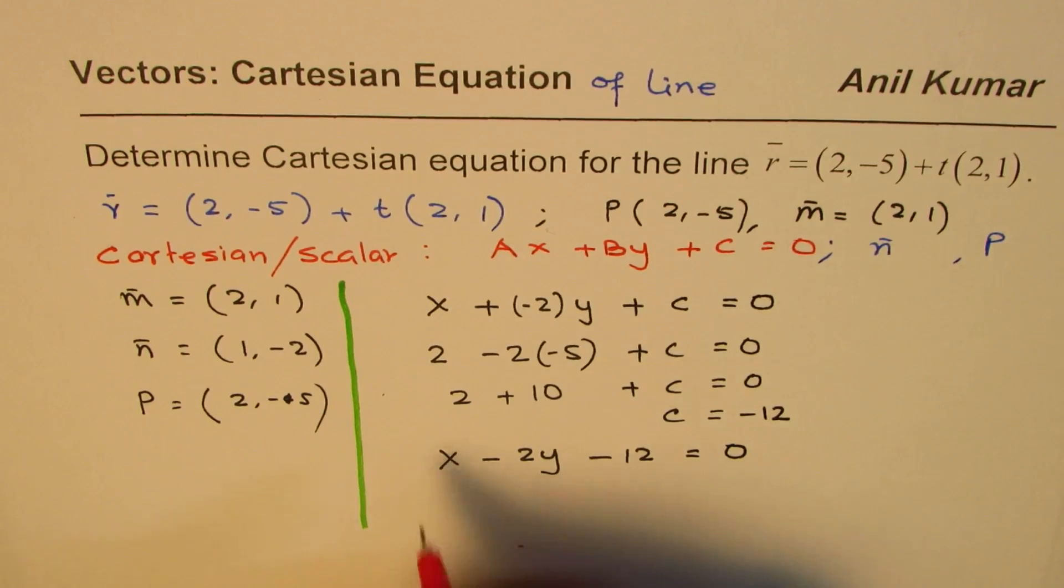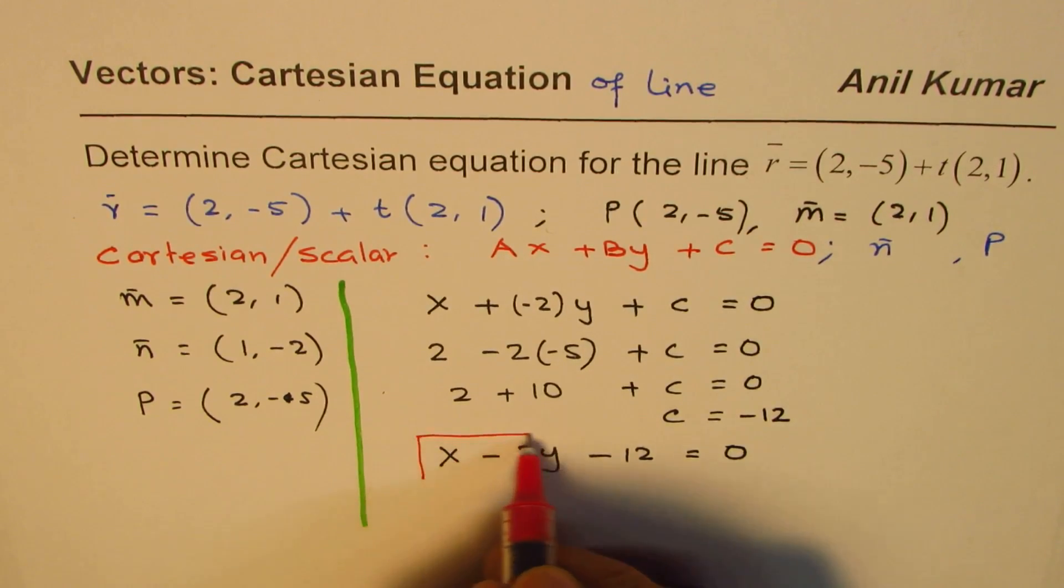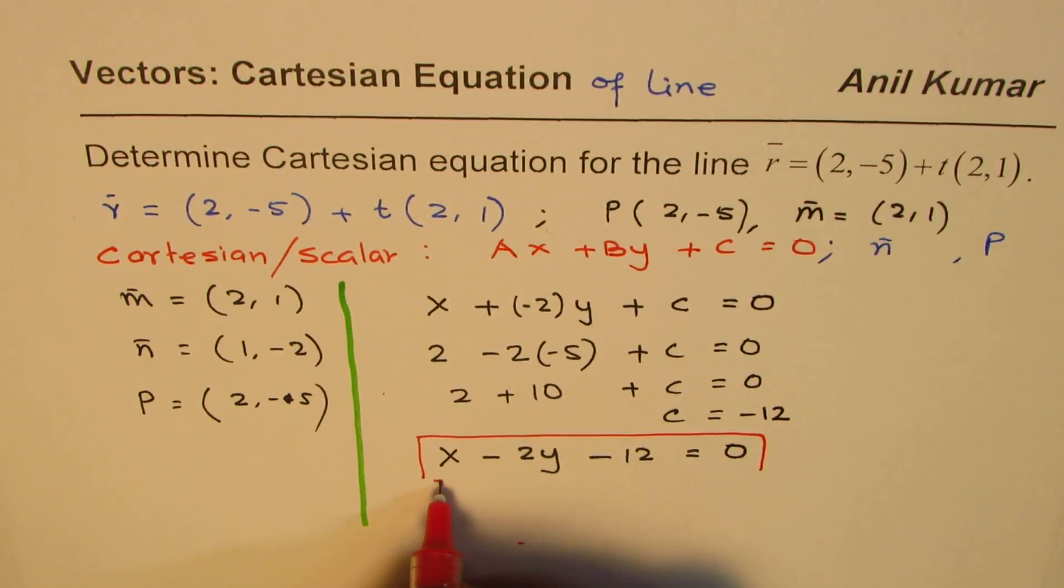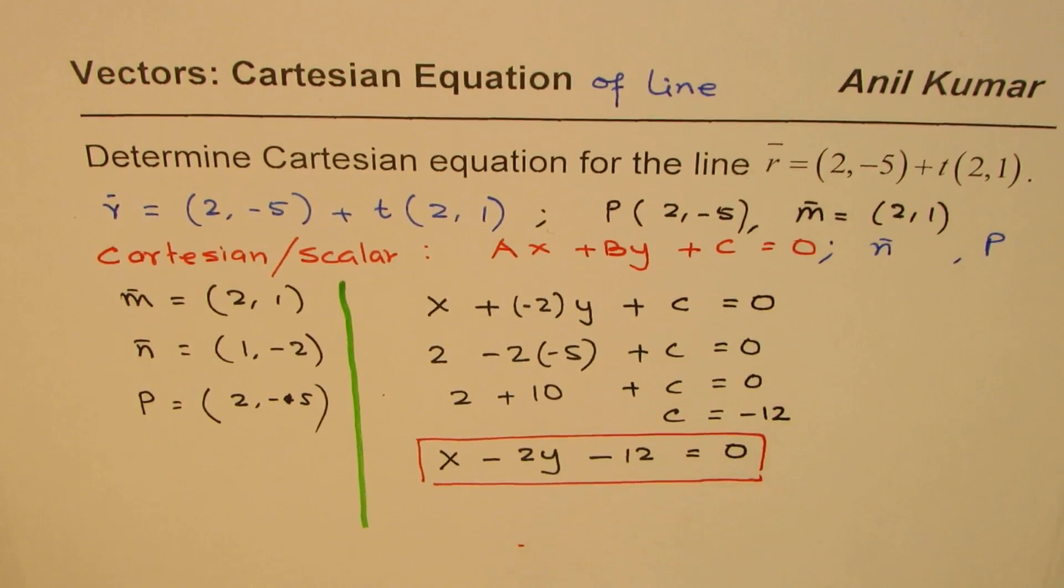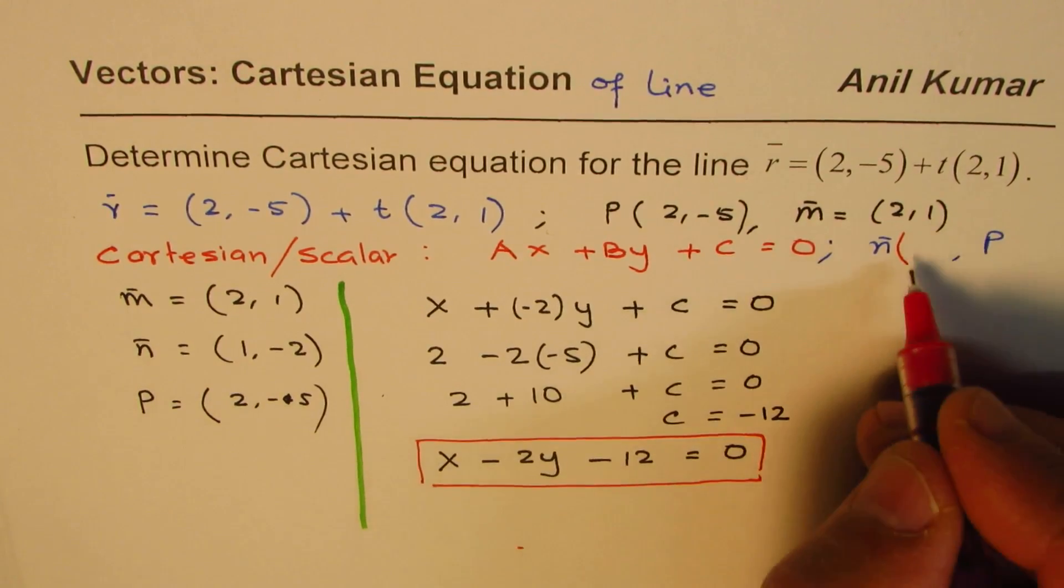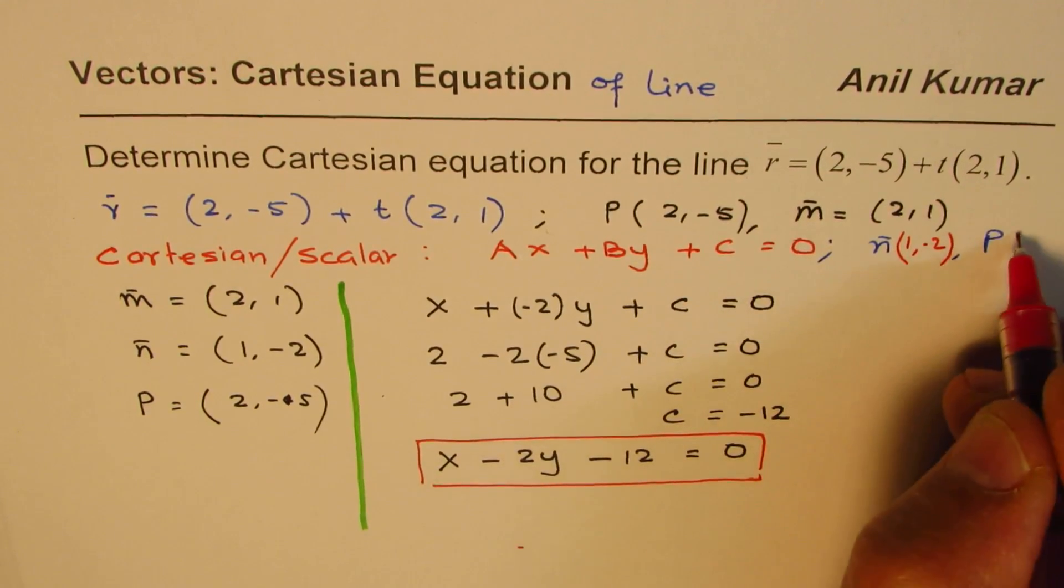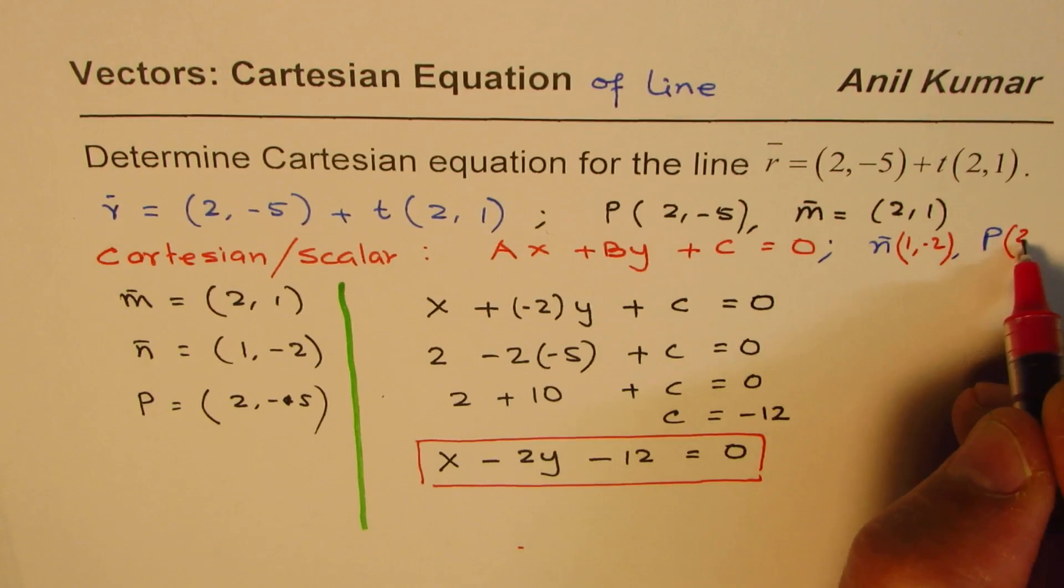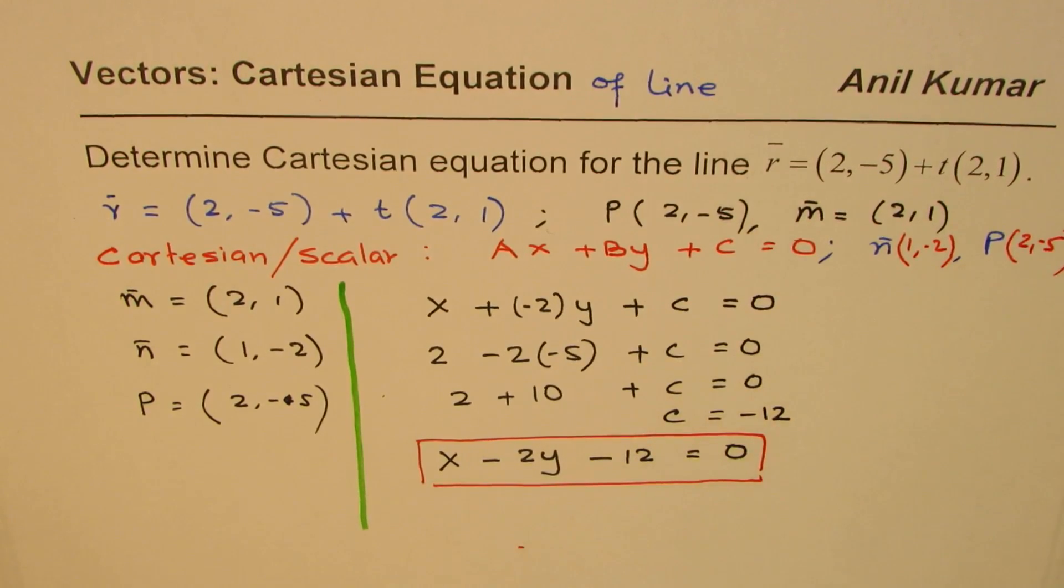So it is so simple as that. I hope you understand the process. Whenever you want to write equation in Cartesian form, you need to figure out what the normal is and what the point is. Once you get the normal and the point, that's easy. Normal was 1, -2 and the point for us was 2, -5. That helps.